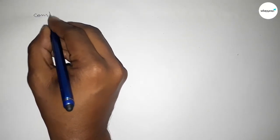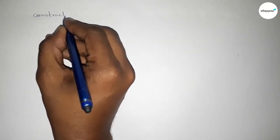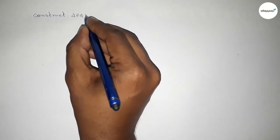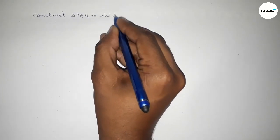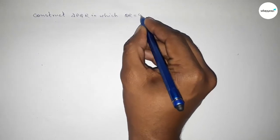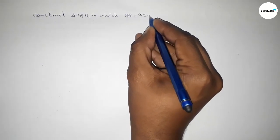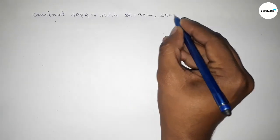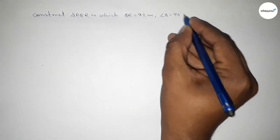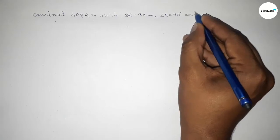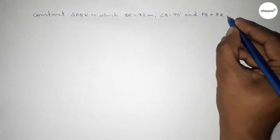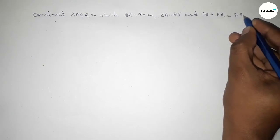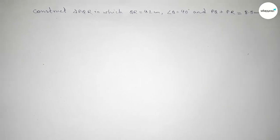Hi everyone, welcome to SSR Classes. Today in this video we have to construct a triangle PQR in which QR equals 4.2 centimeters, angle Q equals 40 degrees, and PR plus PQ equals 8.5 centimeters.